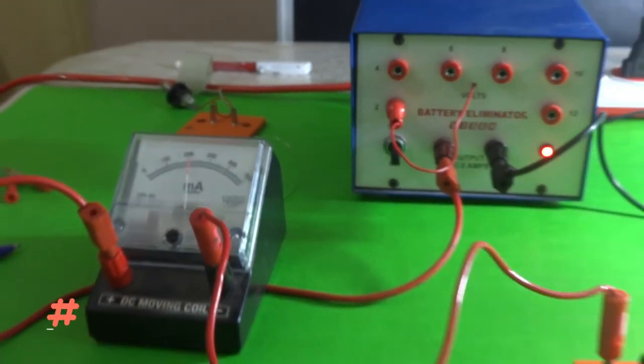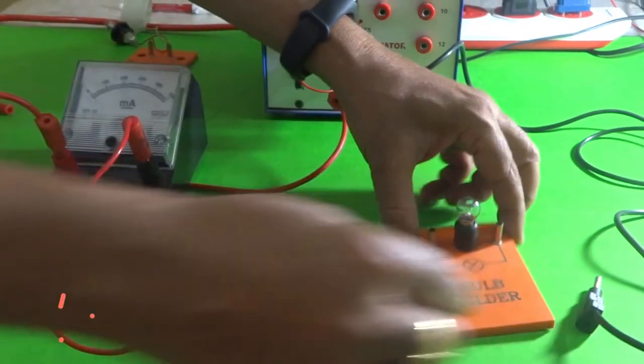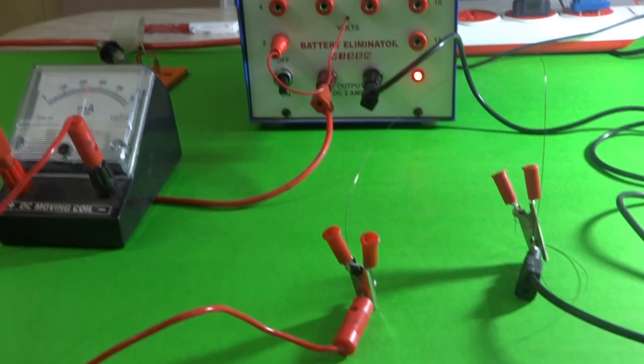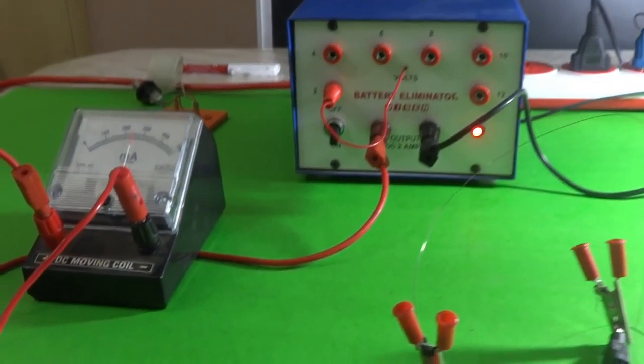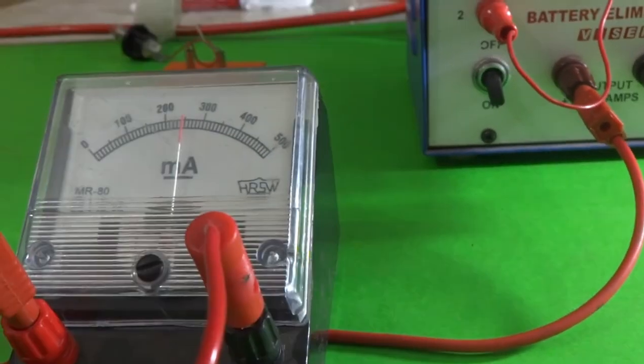Now let us fill this gap by a wire. Now we see that the reading in milliammeter is around 250 milliamperes.